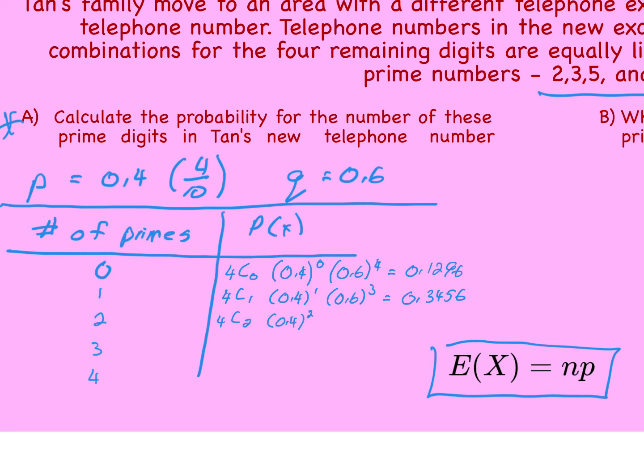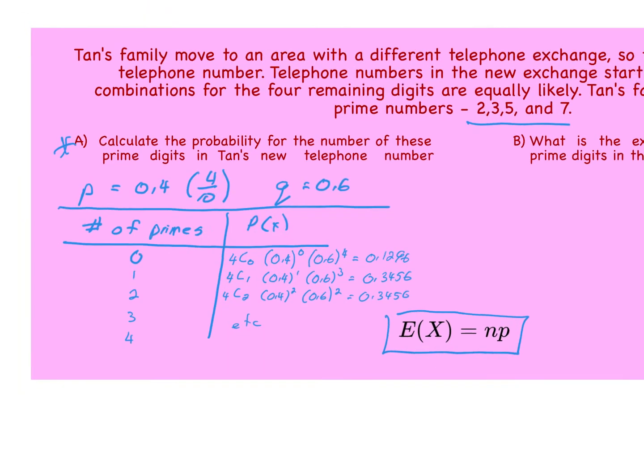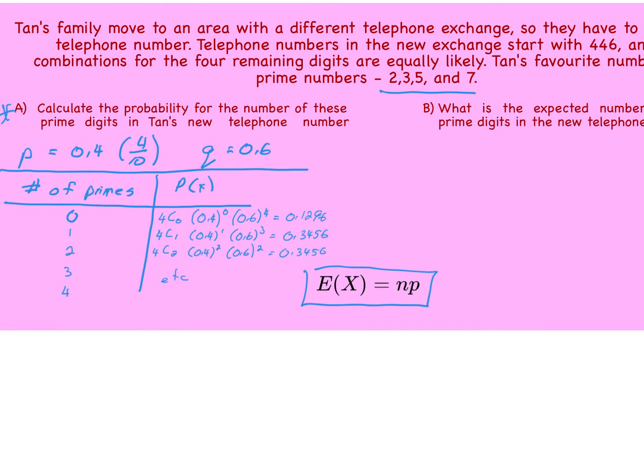It'll be 4 choose 2. So 0.4 squared, 0.6 is going to be squared as well, because it has to add up to 4. And then, etc. for the next two items. So there you go. There's the probability for each possibility of the number of primes in Tan's new telephone number.